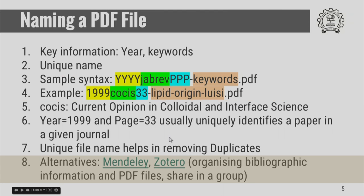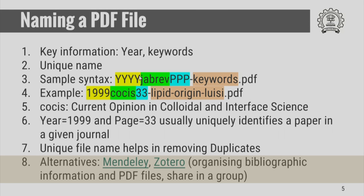There are some alternate ways to store and organize bibliographic information, provided by software such as Mendeley and Zotero. Mendeley also has a facility to automatically download bibliographic information and convert it into various formats such as BibTeX, Endnote and so on. Zotero also provides a similar facility, and both of them have cloud-based support where you can share documents with your group or friends.